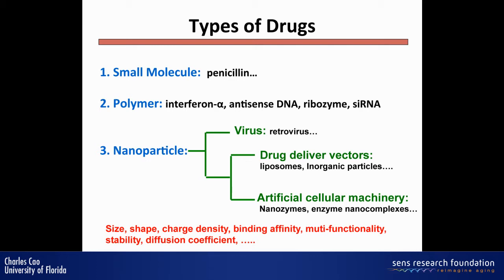There's a new branch of drugs we call artificial cellular machinery. This includes nanozymes that we develop — nanozyme or enzyme-like nanocomplexes developed by our group and others.